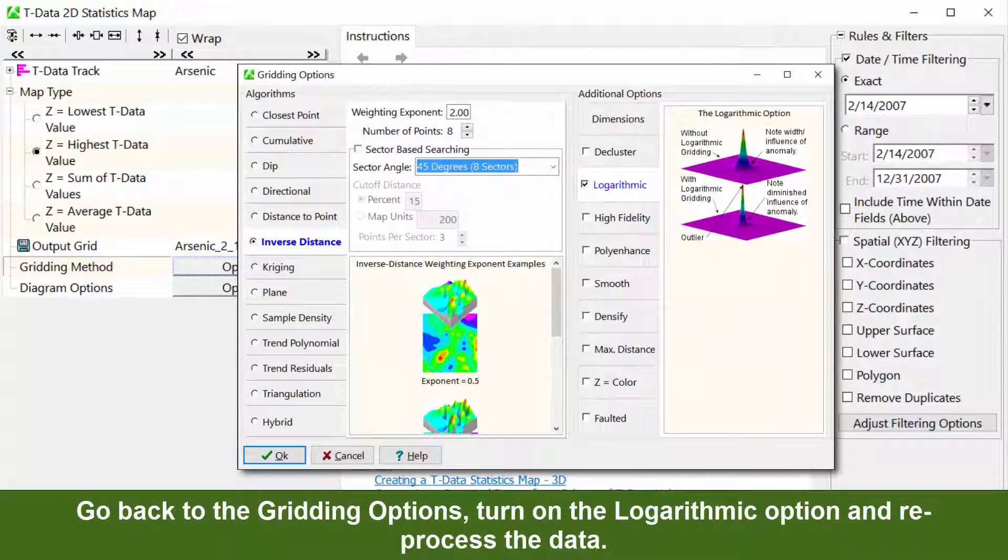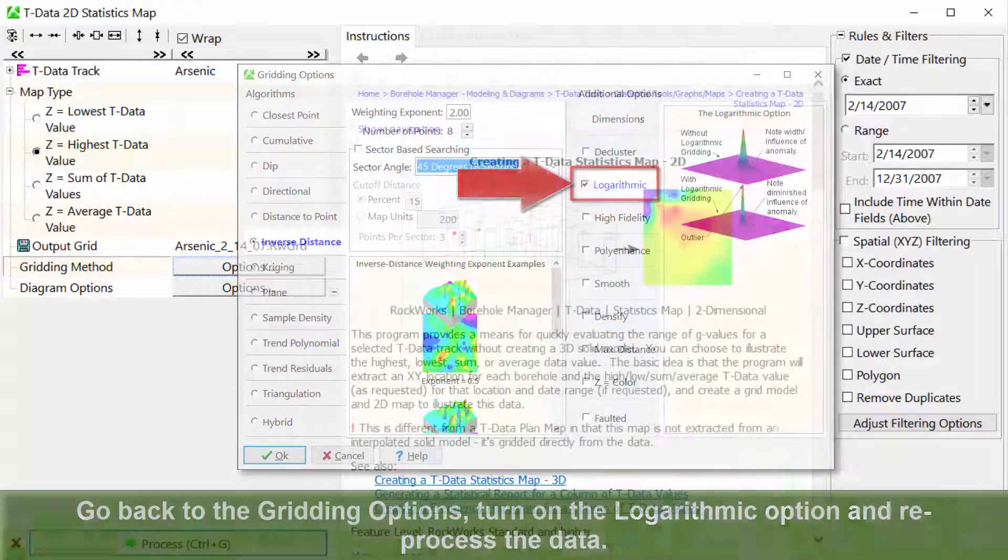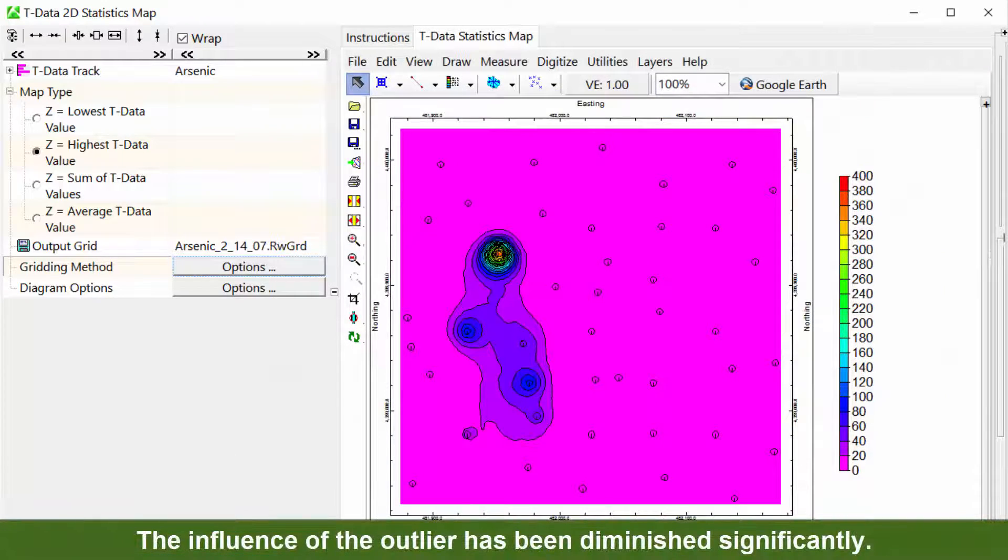Go back to the gridding options, turn on the Logarithmic option, and reprocess the data. The influence of the outlier has been diminished significantly.